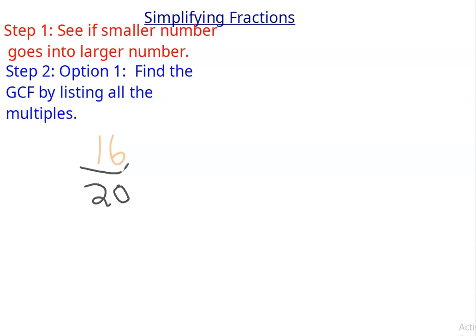So the next thing you can do is you can find the greatest common factor by listing all the factors. This is the most common way of doing it. It requires the most amount of work. It works every time if you do it correctly.